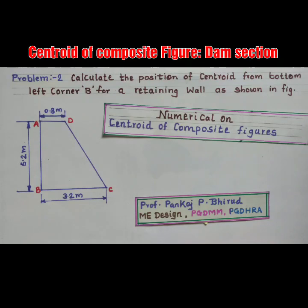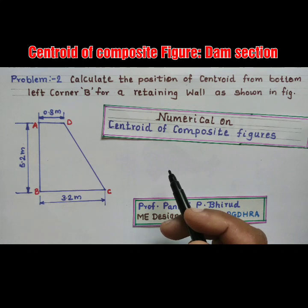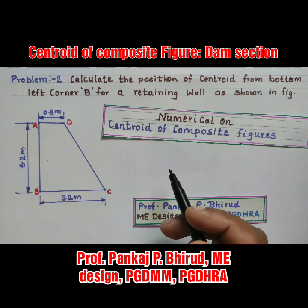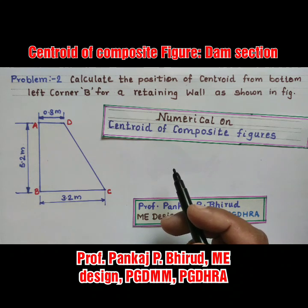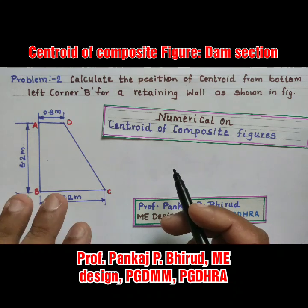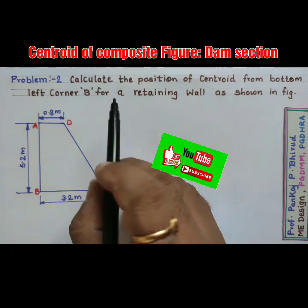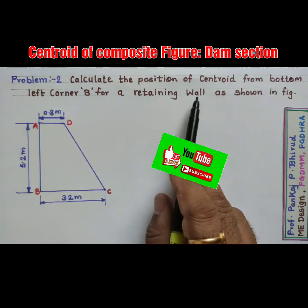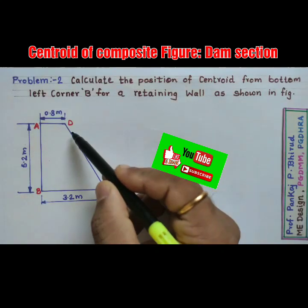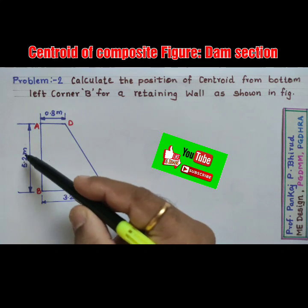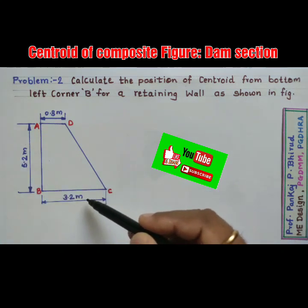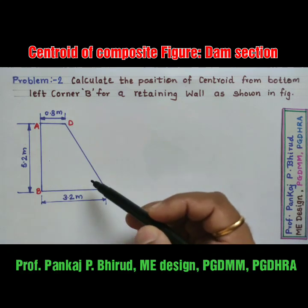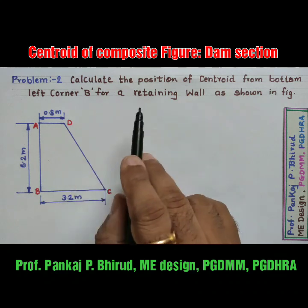Hello friends, welcome to our education channel. In this video we will calculate the centroid of the dam section. In a previous video we found the centroid of the T section; a similar procedure we will follow here. The problem is: calculate the position of the centroid from the bottom left corner B for a retaining wall as shown in the figure. The dam section is given with dimensions: height 5.2 m, bottom side 3.2 m, and top 0.8 m.